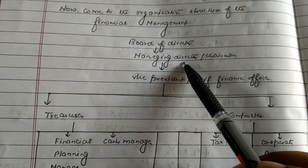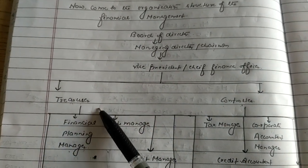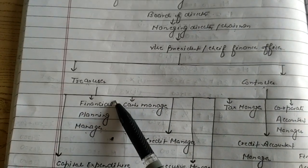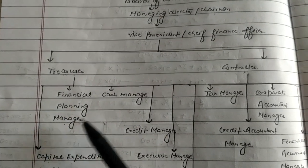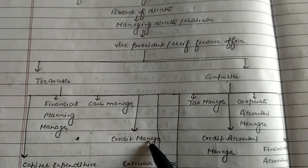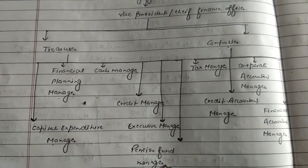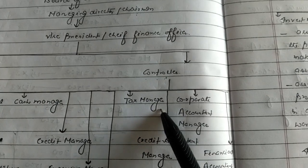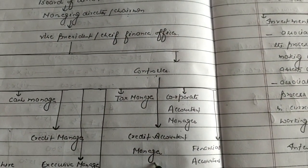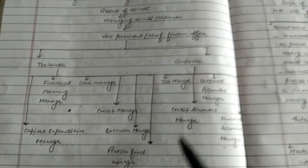The Chief Finance Officer is divided into two types: Treasurer and Controller. Under the Treasurer there are six types of financial managers: Capital Expenditure Manager, Finance Planning Manager, Cash Manager, Credit Manager, Executive Manager, and Pension Fund Manager. Under the Controller there are Tax Manager, Corporate Accountant Manager, Credit Accountant Manager, and Financial Accountant Manager. These are the financial organizational structure of financial management.